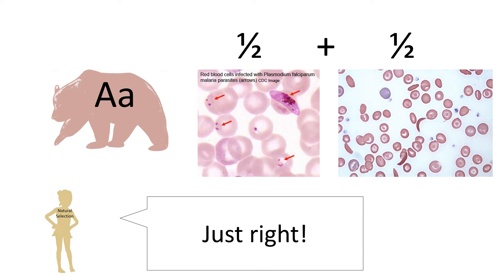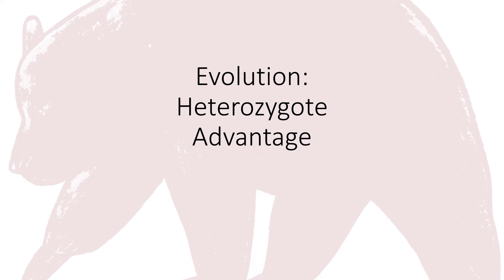This explains how the deleterious sickle cell hemoglobin allele persists in the population when organisms who have both of them would otherwise die. The heterozygote can get benefits from being both wild type and mutated. And that's all you need to know.